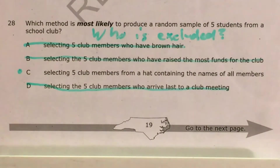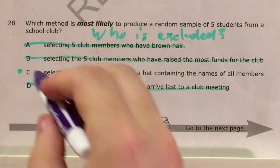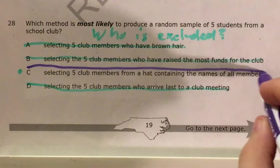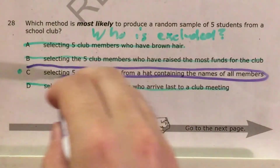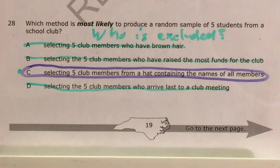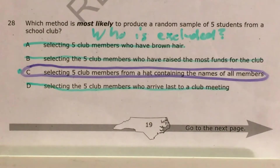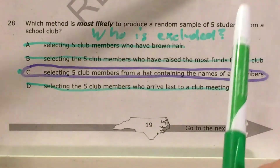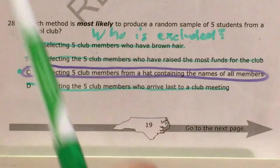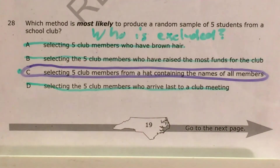And since choice C is the only choice that we can't say excludes anybody, choice C is our answer — selecting five club members from a hat containing the names of all members. And again, whenever you see a question like this that asks you about random samples, just ask yourself who is excluded in each of the methods. The method where the fewest people or nobody is excluded should be your answer.